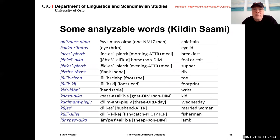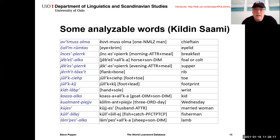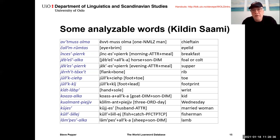Here are some examples of analyzable words from the database in Kildin Sami, the one Uralic language represented. We have words representing meanings such as chieftain, eyelid, and breakfast — and since they're all analyzable, they are all provided with a morpheme gloss. For example, the word for eyelid is made up of two constituents with the meanings 'eye' and 'brim'. These morpheme glosses are really quite important and useful — there's a lot of interesting information there.